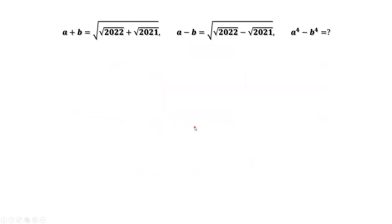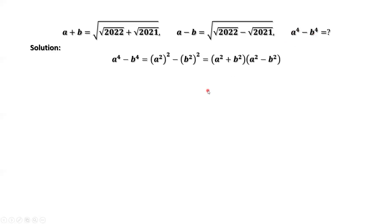Let's factor A to the power of 4 minus B to the power of 4 first. A to the power of 4 equals A squared, then squared. B to the power of 4 equals B squared, then squared. This is the difference of two squares, so we use the formula.